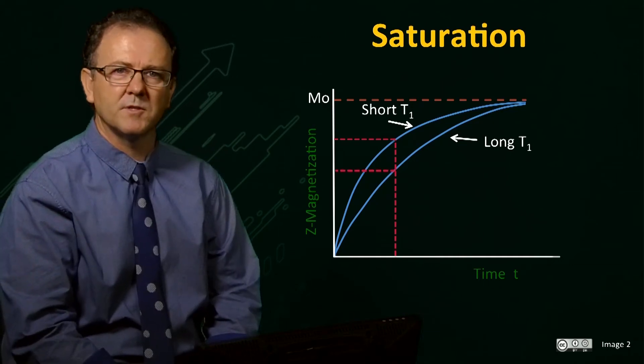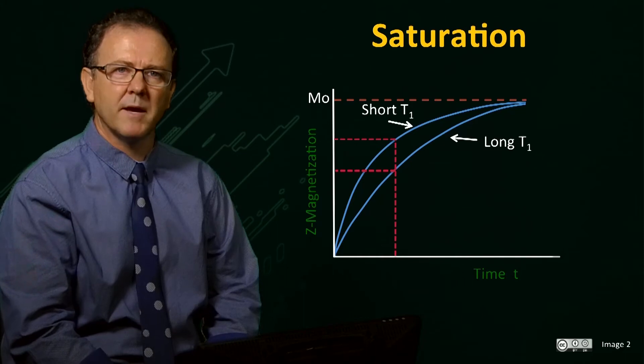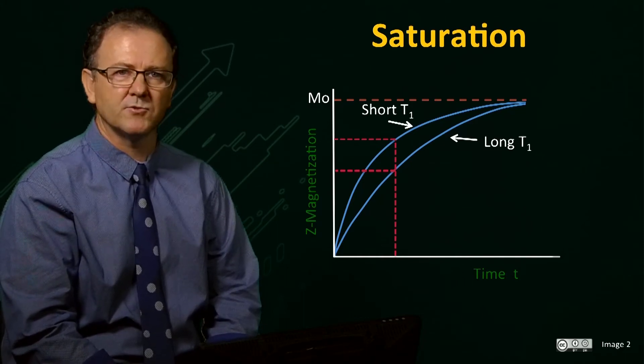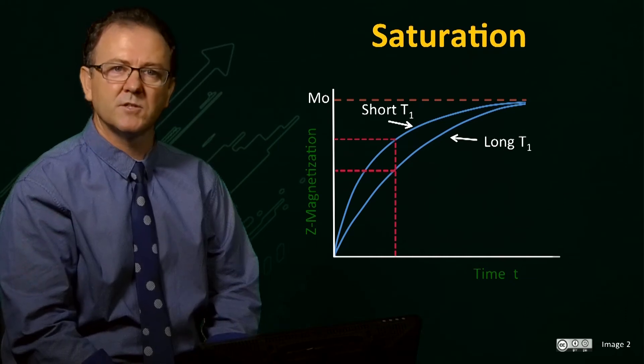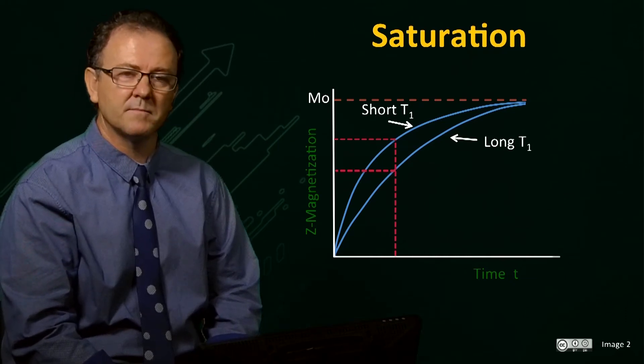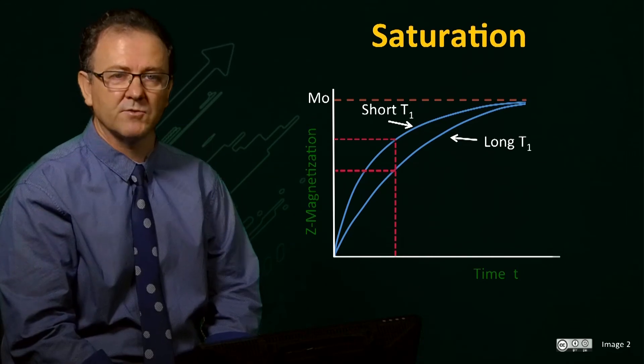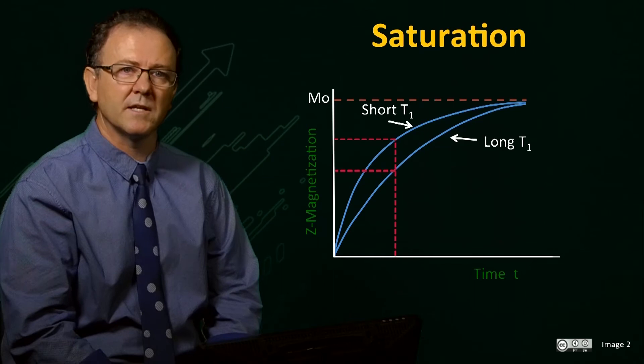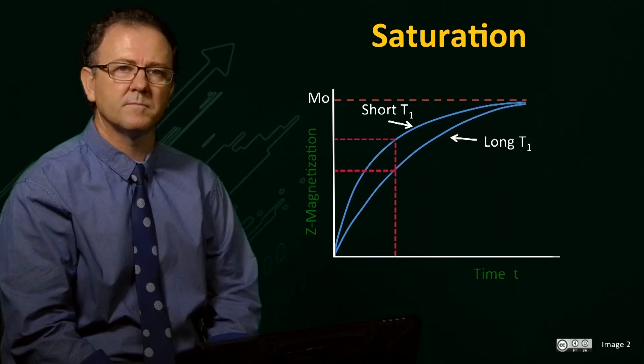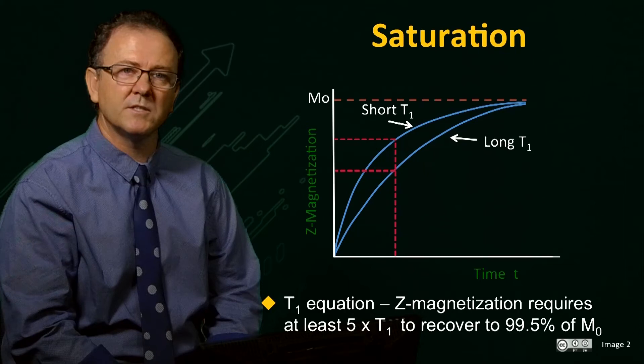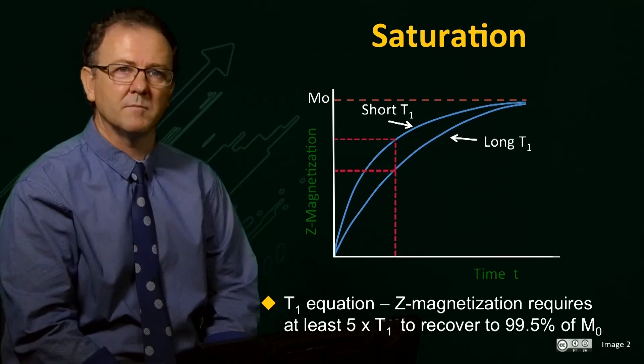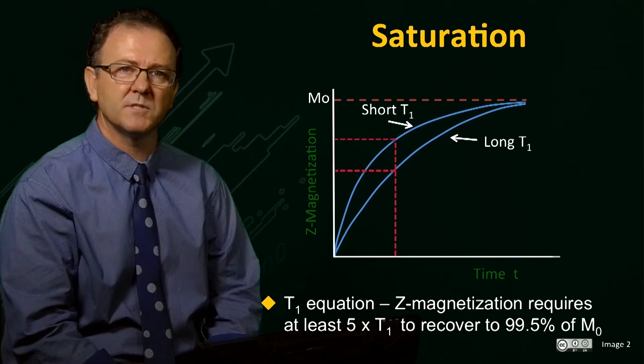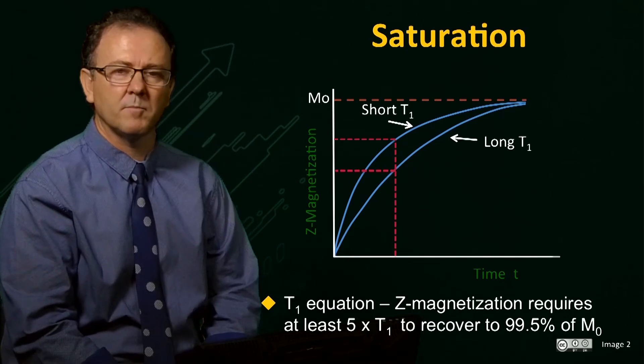If another excitation pulse is applied at this point, then the amount of longitudinal magnetization available to be rotated into the transverse plane will be reduced, and so the signal intensity will be lower. This effect is known as saturation. And if the time between pulses is very short, this can lead to severe signal loss. You can show that to recover to 99.5% of the M0 magnetization level, a delay of at least 5 times T1 is required before applying another pulse.